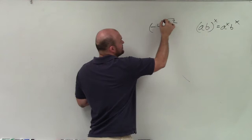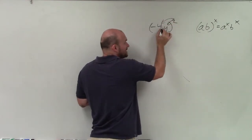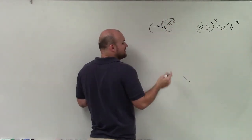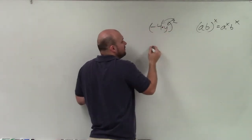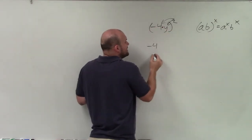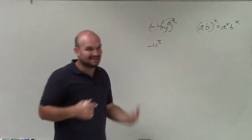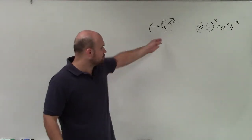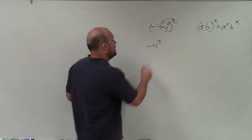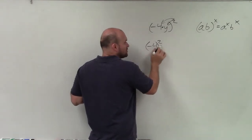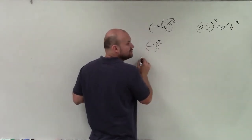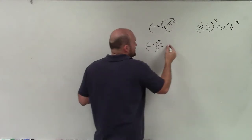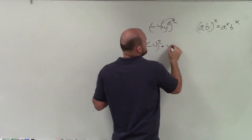So therefore, I can distribute this 2 across the product of negative 4 and y. But it's very important to notice that this is a negative 4. So when I raise this to an exponent, I don't want to write it like this, because that states 4 squared times negative 1. We want to raise negative 4 squared, so I need to insert parentheses to make sure that I've found the operation correctly, times y squared.